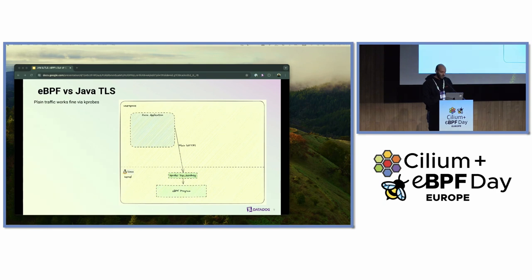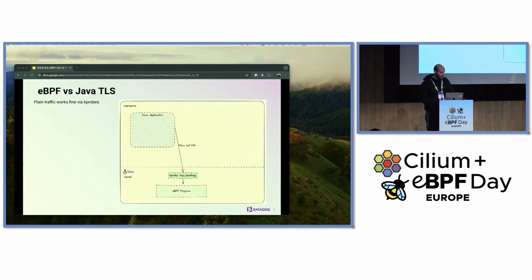Now we can start assembling the puzzle. For plain traffic from a Java application, eBPF actually excels — we can utilize kprobes that are agnostic to the target application's programming language, hooking traffic from the kernel side to capture those payloads. In USM we use socket filters, but for this presentation it doesn't really matter whether kprobes or socket filters. In practice this works well in customer environments, because TLS offloading often happens at the load balancer or gateway level, and inter-cluster communication between microservices is actually plain traffic.